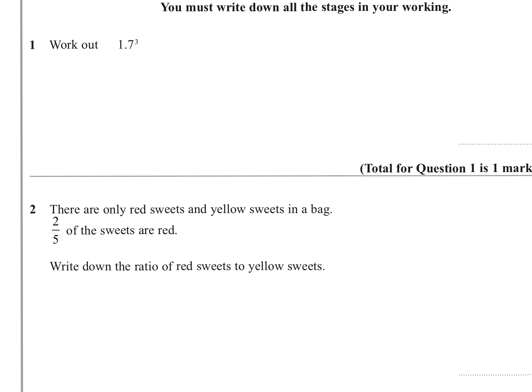Question one: work out 1.7 cubed. That's 1.7 times 1.7 times 1.7. On your calculator, use the power button — 1.7 to the power of 3 — and you get 4.913. So that's one mark.